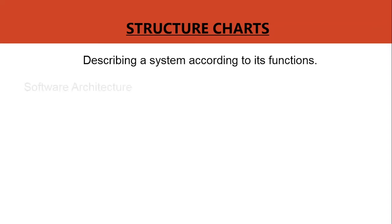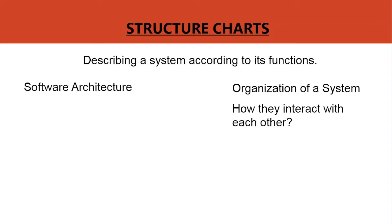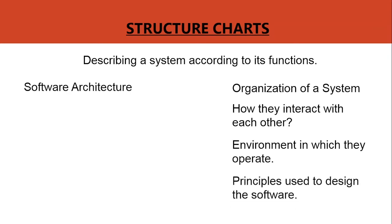And this chart describes the software architecture. So what is software architecture? Software architecture is simply the organization of a system. This organization includes all the components, how they interact with each other, the environment in which they operate, and the principles used to design the software.